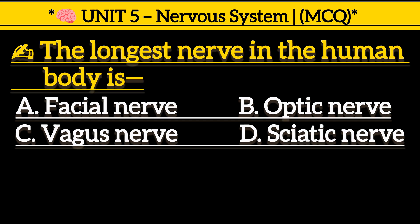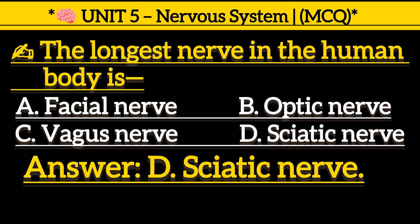The longest nerve in the human body is: Option A, facial nerve. Option B, optic nerve. Option C, vagus nerve. Option D, sciatic nerve. Correct answer is Option D, sciatic nerve.